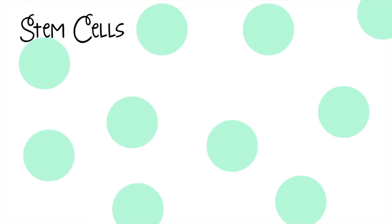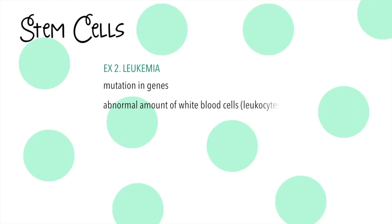The IB requires you to know Stargardt's disease and one other named condition. Leukemia is a mutation in genes that control cell division, so cell division goes out of control. This leads to an enormous amount of white blood cells, and although white blood cells fight infection, too much is dangerous.